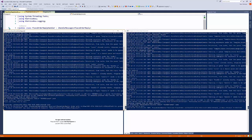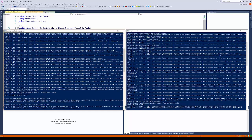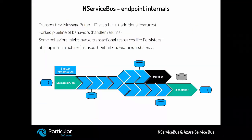Let's look at the internals of an endpoint. An endpoint is basically a representation of NServiceBus, transport, running, processing messages, allowing you to perform messaging operations. The transport provides you the messaging pump — the message loop responsible to receive messages — and the dispatcher, which is responsible for sending messages out. The internals of the endpoint can be represented by what we call pipelines. There are three pipelines: the incoming pipeline, the handler pipeline, and the outgoing pipeline.